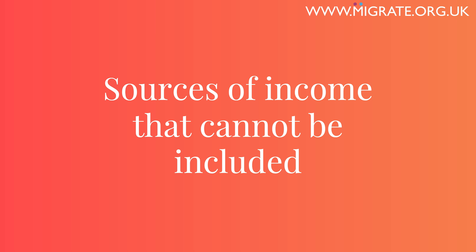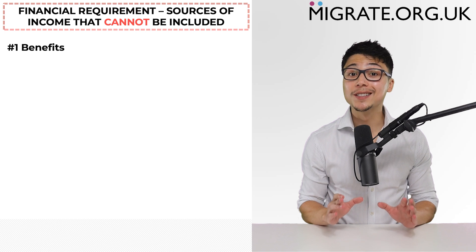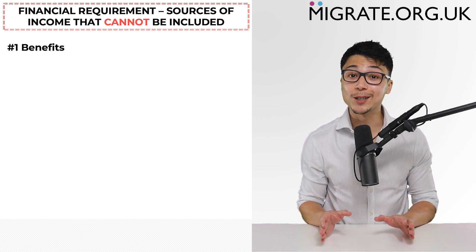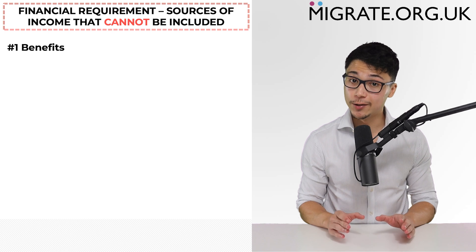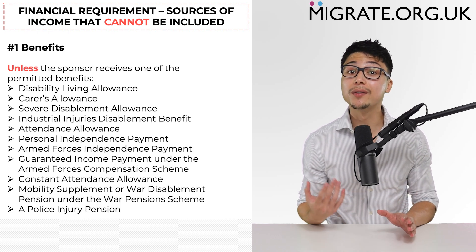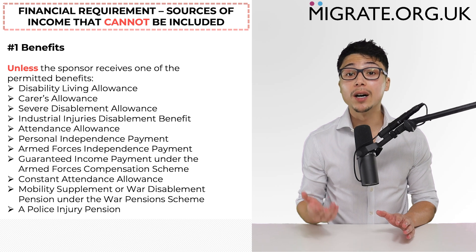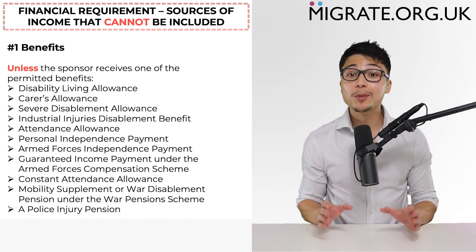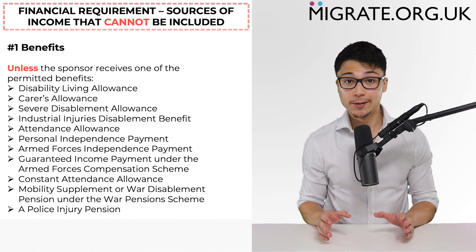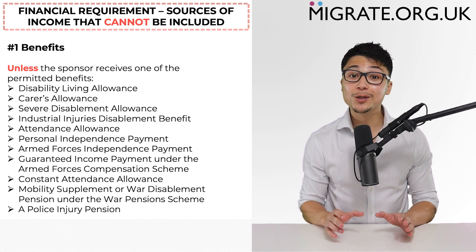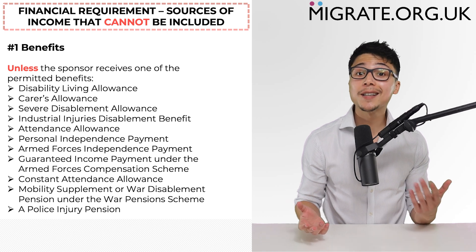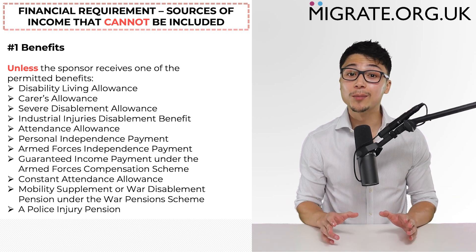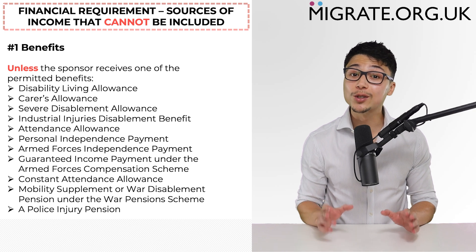In this video we have discussed the sources of income that can be included in the financial requirement. Let's now discuss the sources that cannot be included. One: the starting point is that income from benefits cannot be included in the financial requirement for UK fiancé visas, unless the sponsor receives one of the following permitted benefits, whether on behalf of their child or not. If the sponsor does receive one of these benefits, the adequate maintenance test applies, which will only require you to show that your weekly net income, minus housing expenses, is greater than or equal to the amount of income support an equivalent British family of your size can receive.